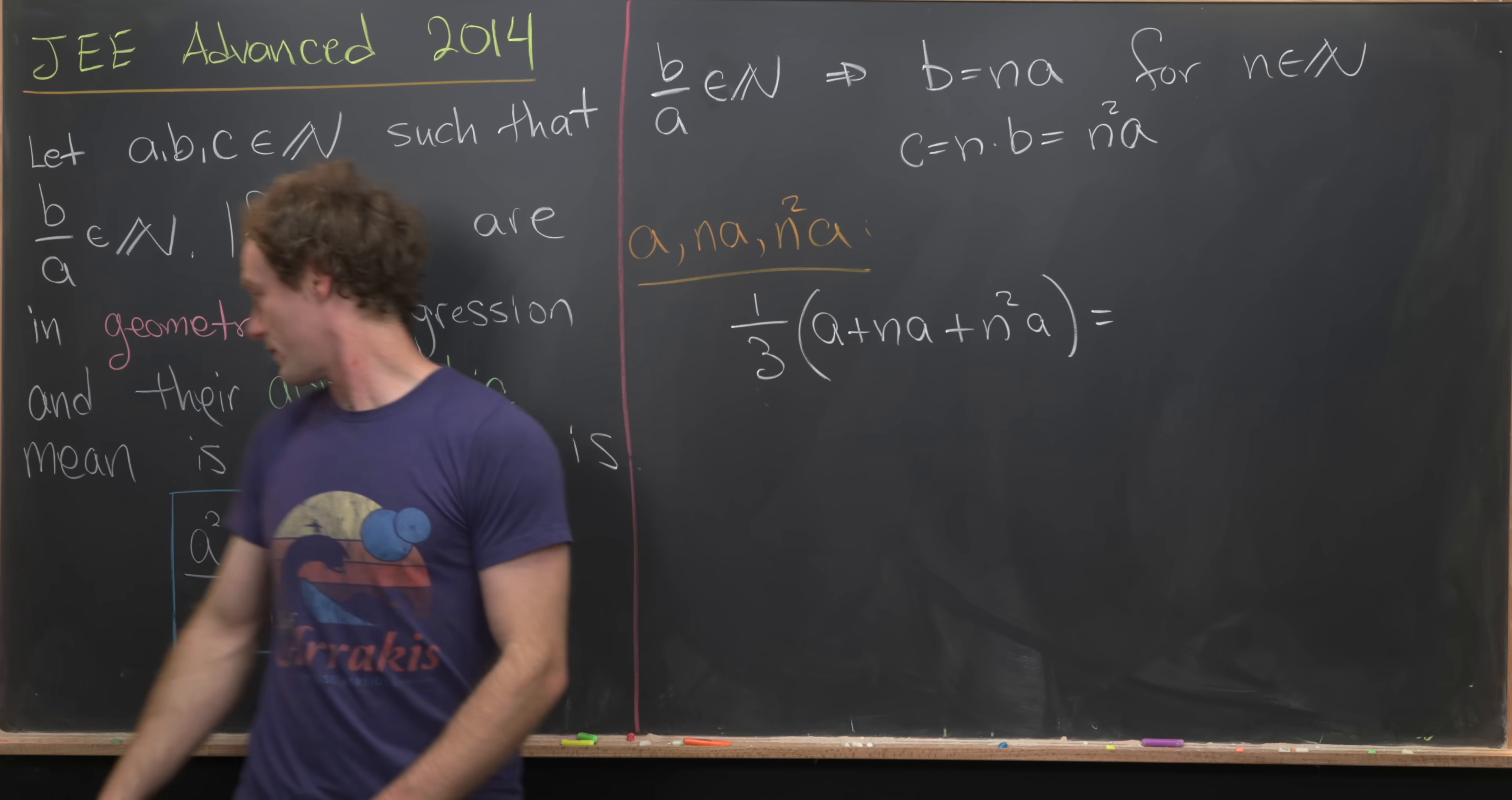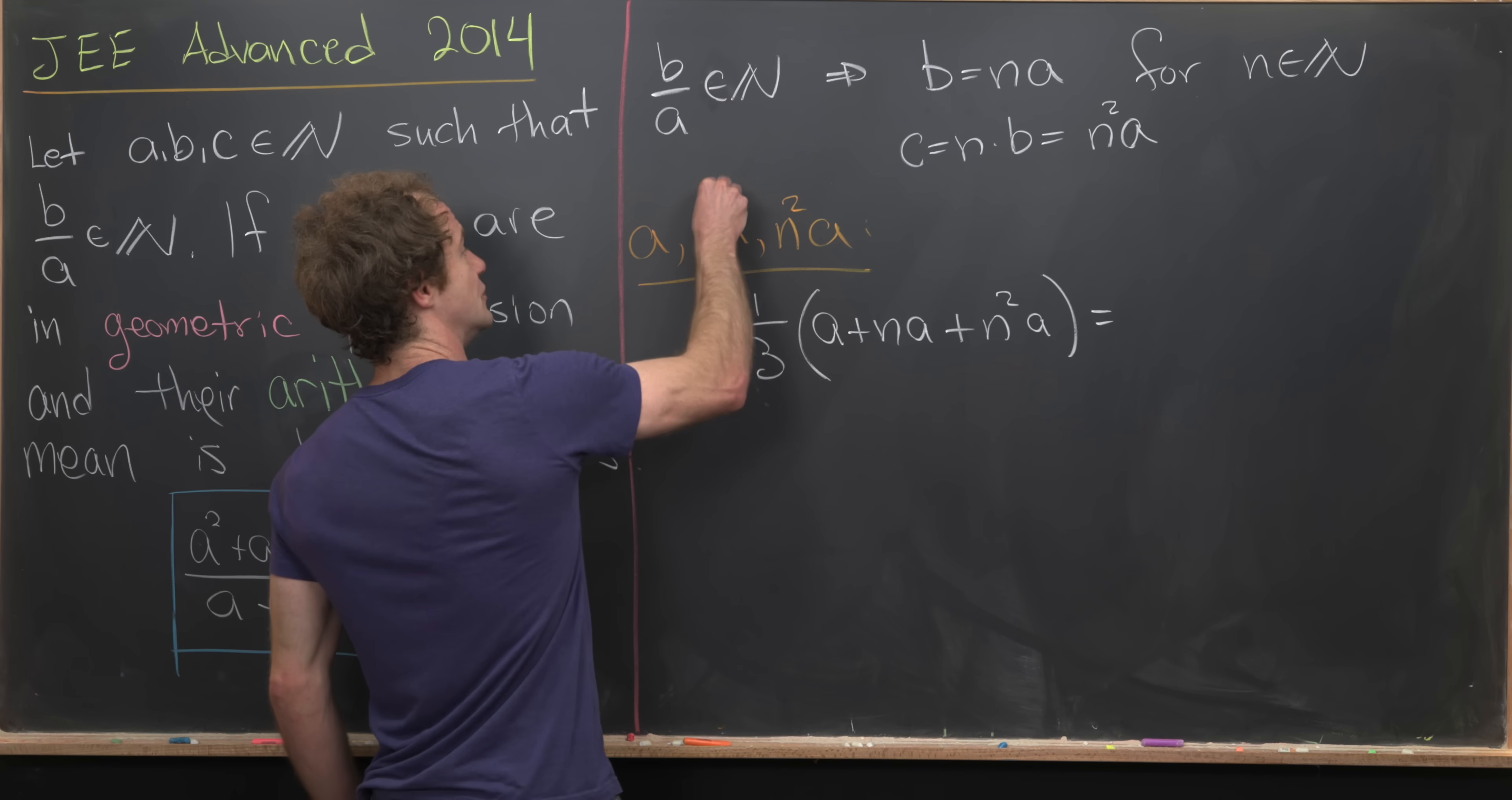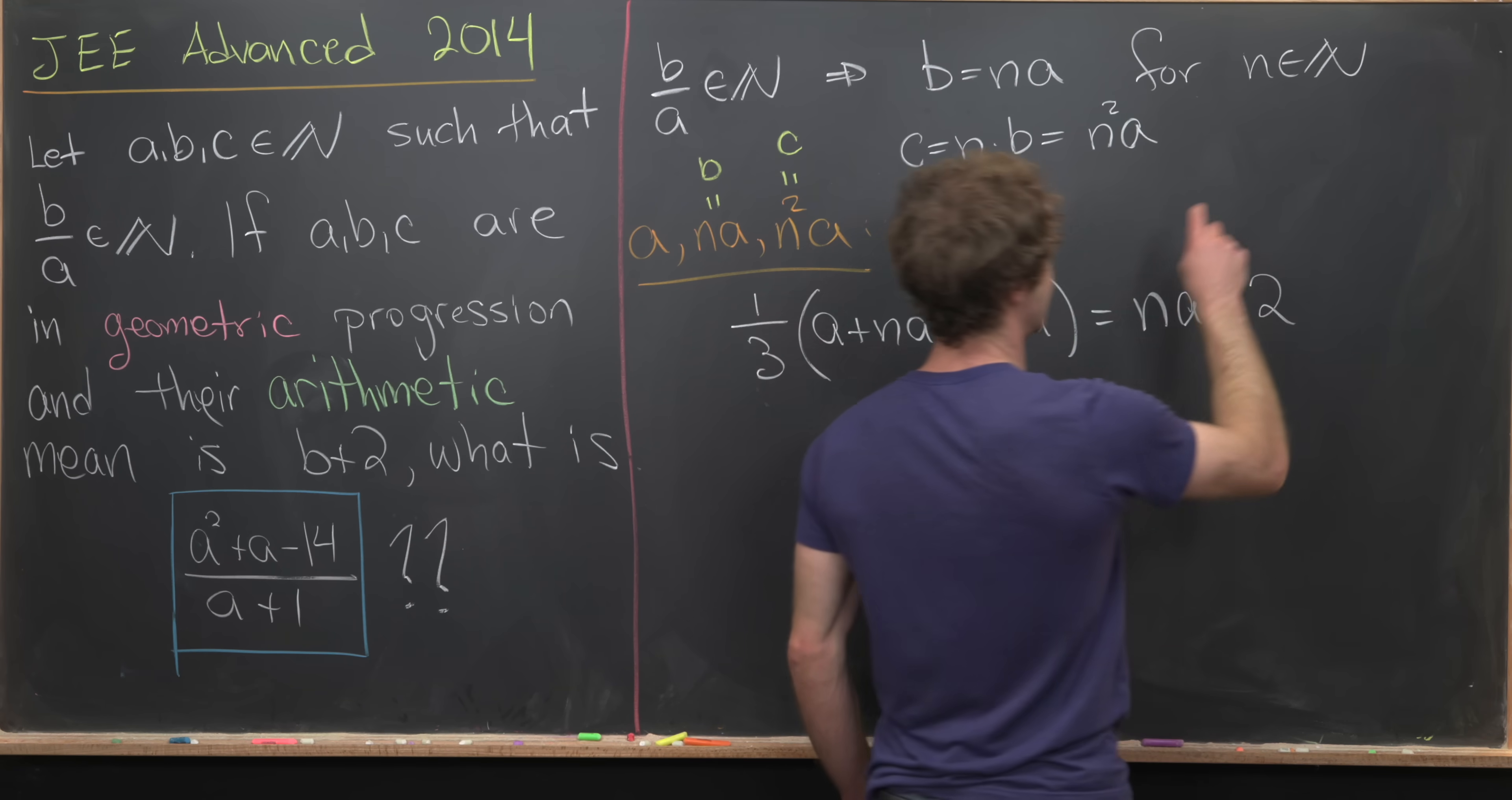But on the other hand, in the problem, we are given that that is equal to B over 2. But we know that B is equal to N over A from our earlier discussion. So we can write this as N times A plus 2.